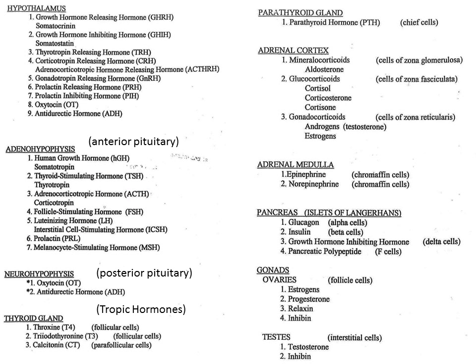Here is a summary of all the hormones secreted by the hypothalamus, anterior pituitary, posterior pituitary, thyroid gland, parathyroid gland, adrenal cortex and medulla, pancreas, and gonads — including the ovaries and testes.